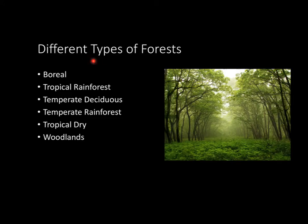Let's take a look at the different types of forests. In chapter 4 we actually went over all of these types, but the book lists them again. So here we have the boreal, the tropical rainforest, the temperate deciduous, temperate rainforest, tropical dry, and the woodlands. We already went over those in depth in chapter 4, so you can refer back to that video if you have any extra questions.